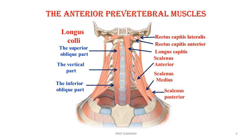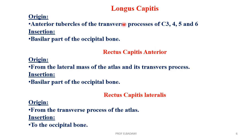These are the group of muscles which we call the anterior pre-vertebral muscles. The longus capitis arises from the anterior tubercles of the transverse processes of the third to the sixth cervical vertebrae, to be inserted into the basilar part of the occipital bone. The term 'capitis' means it will be inserted or attached to the skull — that is why it is called capitis. The rectus capitis anterior goes from the lateral mass of the atlas and its transverse process to the basilar part of the occipital bone. The lateralis goes from the transverse process of the atlas to the occipital bone.